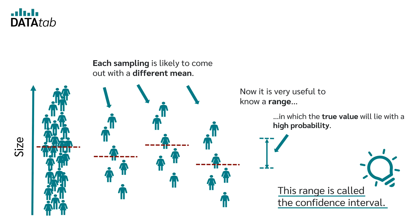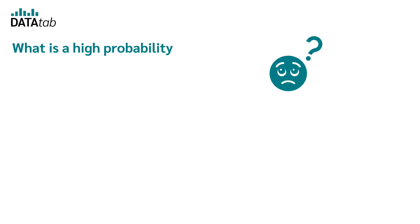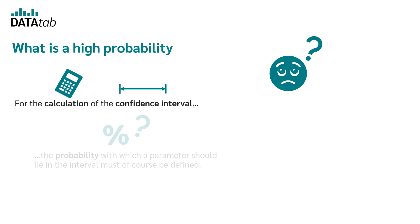Thus, the confidence interval gives us a range in which the true mean is likely to be found with a certain probability. But what is a high probability? For the calculation of the confidence interval, the probability with which a parameter should lie in the interval must of course be defined beforehand.